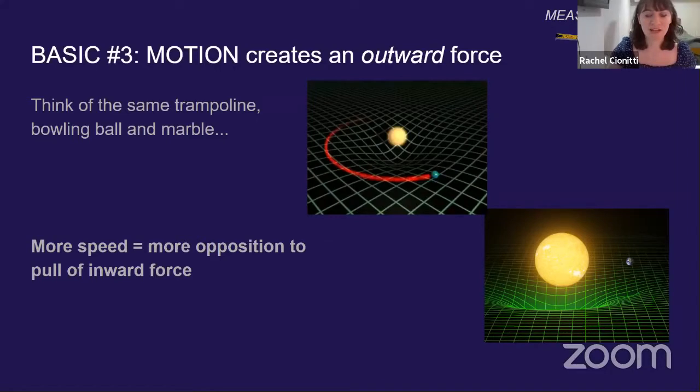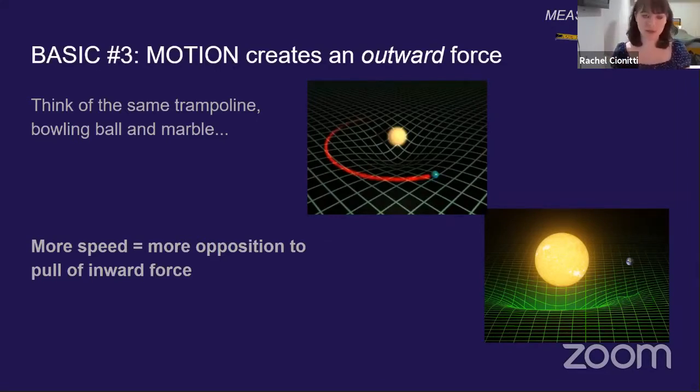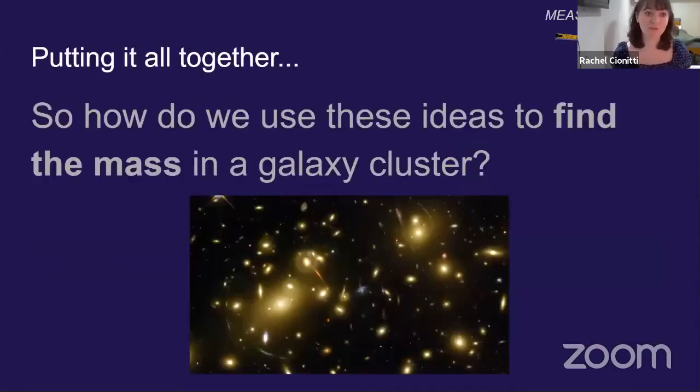So in the other case, while you have more mass, you have more pull. In this case, if you have more speed, you have more opposition to that inward pull.